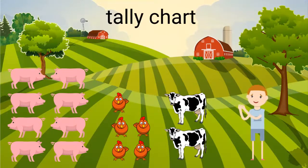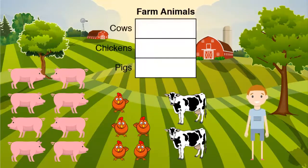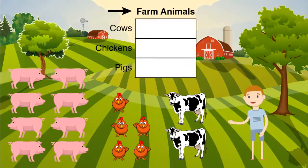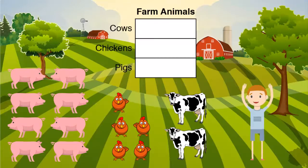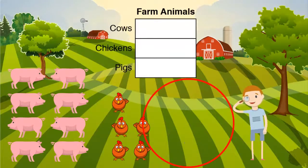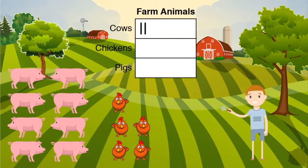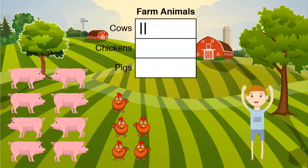We can also make a tally chart to show our data. This tally chart also has a title and categories just like the picture graph. However, a tally chart uses line marks for each piece of data. We have two cows. We can show this by making two marks next to cows. Each of these marks shows one cow.